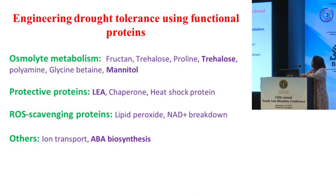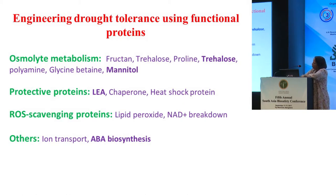Through functional proteins, you can do osmolite metabolism. People have done this in multiple ways: fructan, trehalose, proline, polyamine, glycine betaine, and mannitol for osmolite metabolism. Then you have protective proteins — LEA, chaperone, heat shock proteins. Then reactive oxygen species scavenging proteins like lipid peroxidase, NAD+ breakdown. And miscellaneous others like iron transport and ABA biosynthesis. One can use multiple functional proteins singly or in concert to affect the properties.